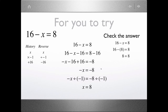For 16 minus x equals 8: the first step is to multiply x by negative 1, then add 16. The inverse and reverse is subtracting 16, then dividing by negative 1. We subtract 16 from each side to get negative x equals negative 8. Dividing each side by negative 1 gives x equals 8. Checking: 16 minus 8 equals 8. That's true, so the answer is correct.